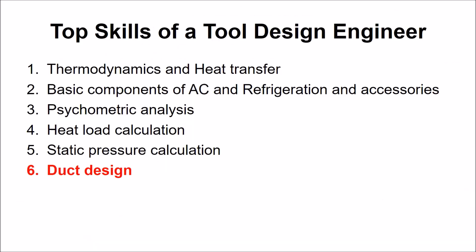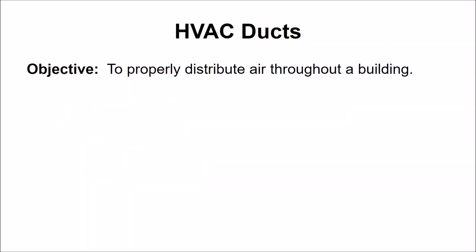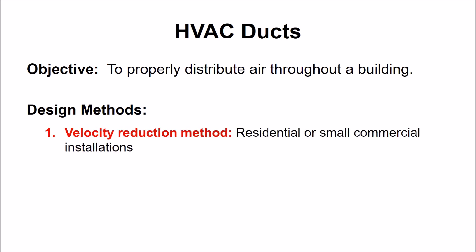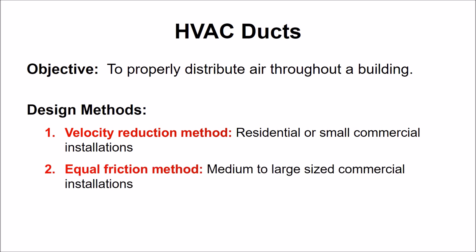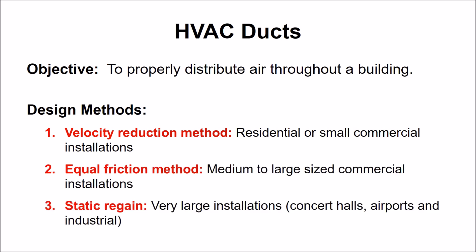Sixth skill is duct design. Duct systems are designed to properly distribute air throughout a building. Ducts that are not well designed result in discomfort, high energy costs, bad air quality, and increased noise levels. There are many different methods used to design ventilation systems, the most common being the velocity reduction method, equal friction method, and static regain method. Choosing the right size duct is critical to maintain proper airflow in the system.